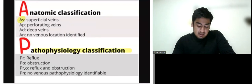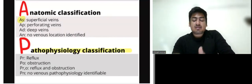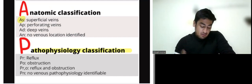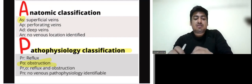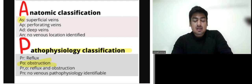Now we have this pathological classification, pathophysiological. So PR means reflux in venous system. PO means obstruction might be because of DVT. PRO means there is both reflux and obstruction and PN means no venous pathophysiology cause identifiable.